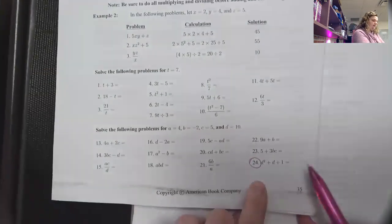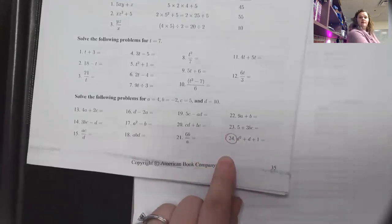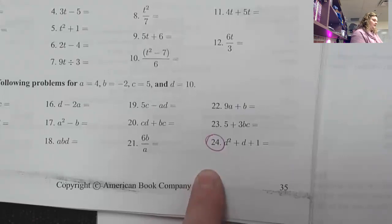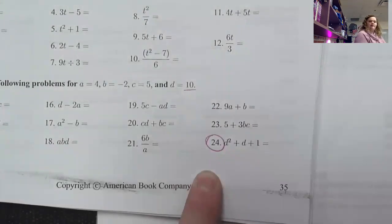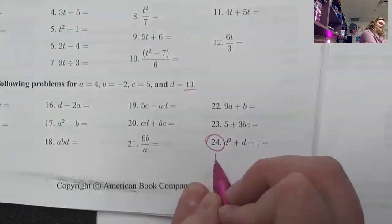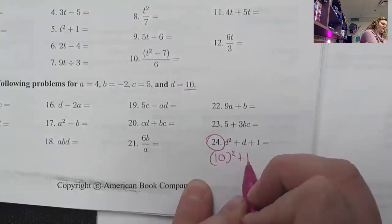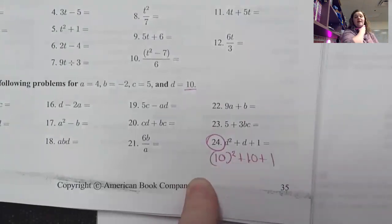So this first one here, if we did this example, and I'll zoom in so that you can see it, it says D squared plus D plus one. Well, you have to find out what D is. Well, that's given to you, right? So remember that that's 10 squared. Okay, and then that would be plus 10 plus one. So you just substitute them in.